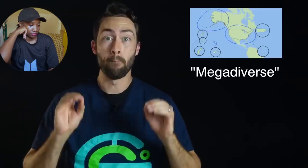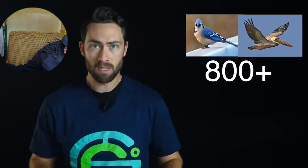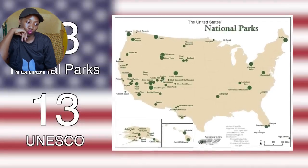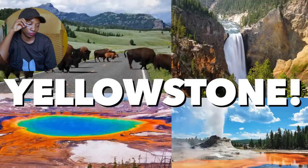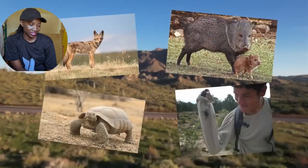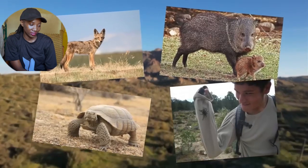Classified as one of the top 10 megadiverse nations on earth, the U.S. has over 600 species of reptiles and amphibians, more than 800 species of birds, and over 430 species of mammals — the largest being the North American bison. Today we have 63 national parks, 13 of which are UNESCO World Heritage Sites, including the world's first national park, Yellowstone. The swampy deep south is a reptile haven with alligators and turtles lurking everywhere.